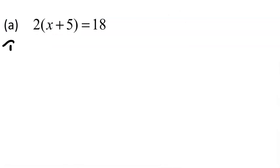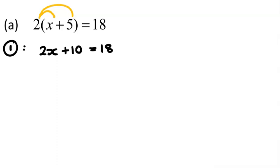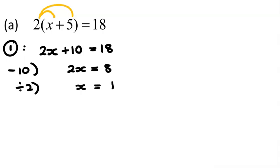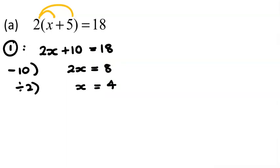So for this first question, let's start by doing method number one: expanding the bracket. On the left-hand side, 2 times x gives us 2x, and 2 times 5 gives us 10, and that equals 18. Now we've got a familiar equation to solve. We take 10 away from both sides, so 2x equals 8, then divide both sides by 2: x equals 4. Notice we're lining up the equal signs — they sort of look like a baguette, a lovely long French loaf of bread.